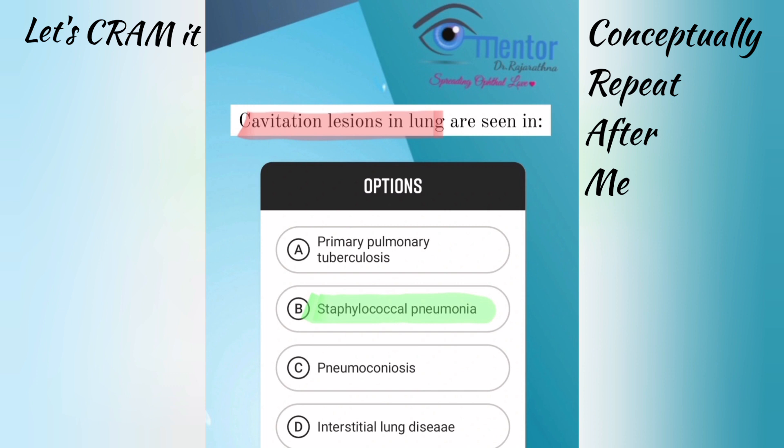What is seen in primary tuberculosis? You remember Ghon focus? That fibro-caseous lesion is seen as consolidation and not as a cavity. Now, what are the organisms causing cavitation? Let us remember a mnemonic: Staph-An is a Pseudo-Klepto. So Staph aureus and anaerobic organisms, Pseudomonas, and Klepto to remember Klebsiella.